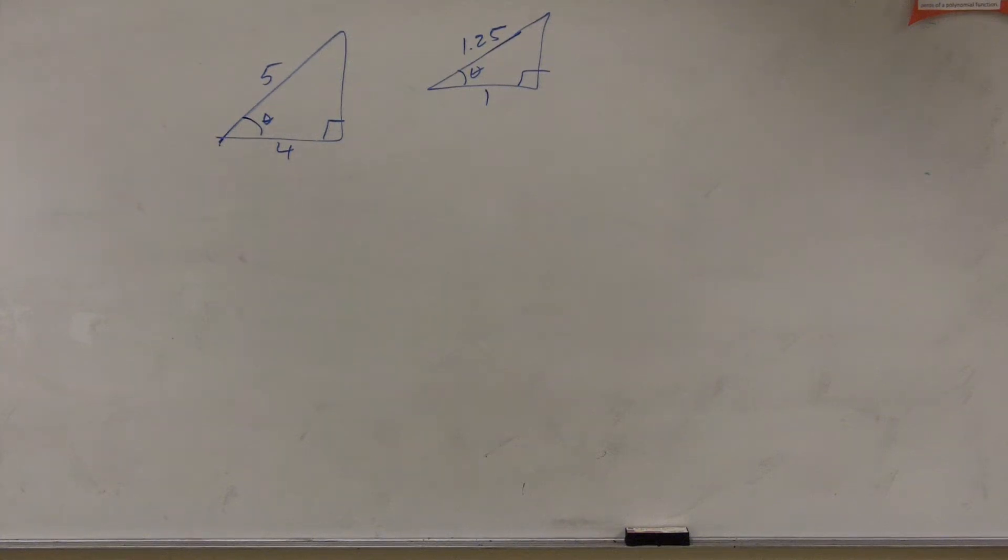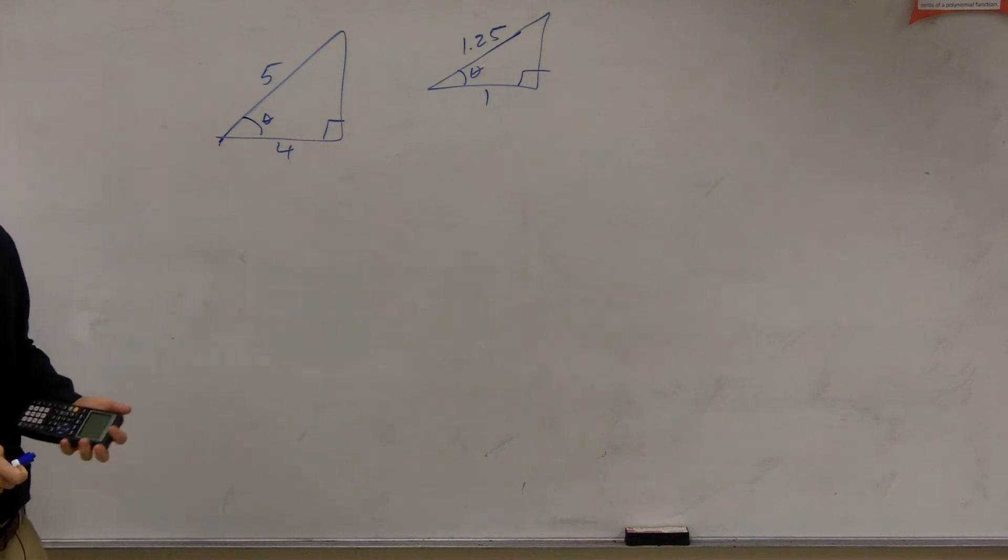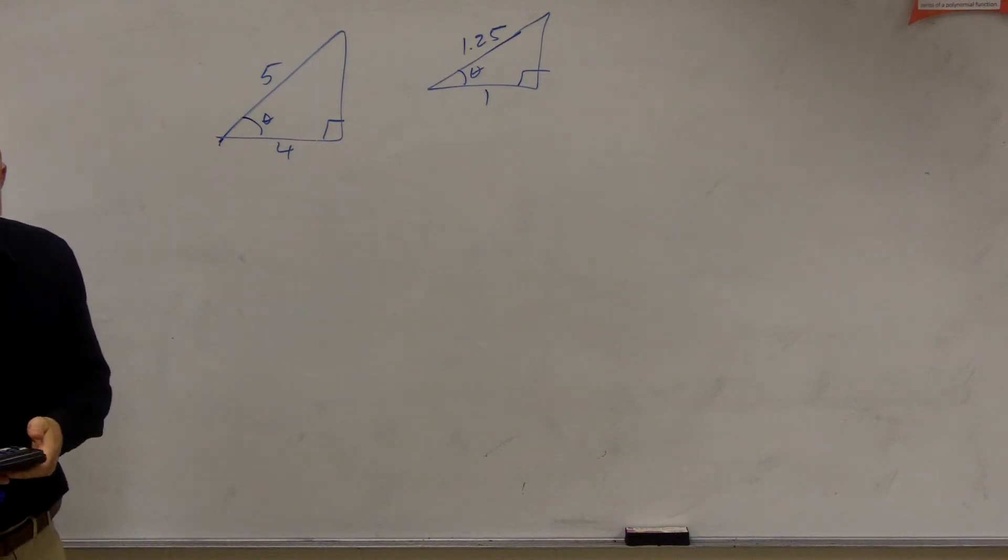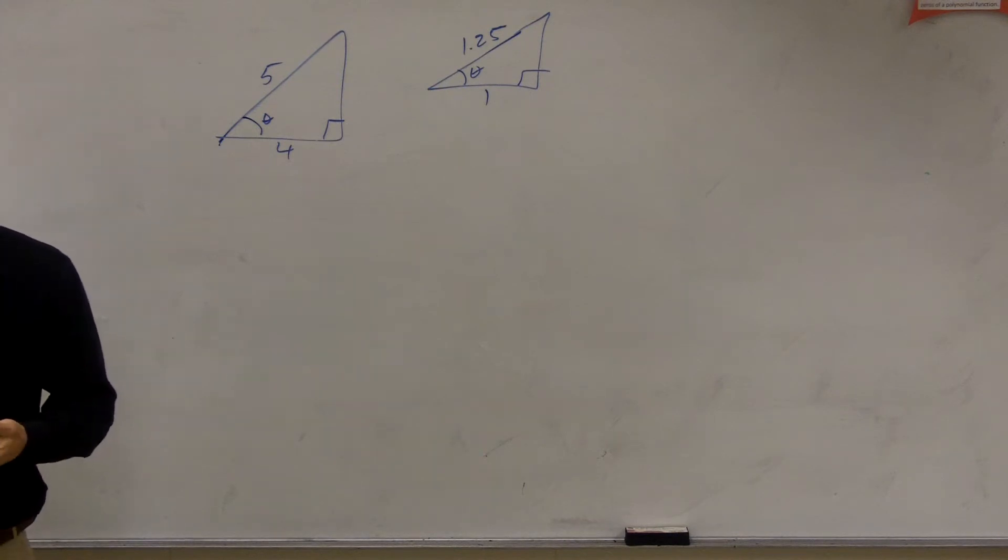Okay, so to go through this, you have 5, I'm sorry, 5 over 5 and 4 and 1.25 and 1. So what we need to do is we need to determine if these are going to be similar triangles or not, and then find the six trigonometric functions, right?